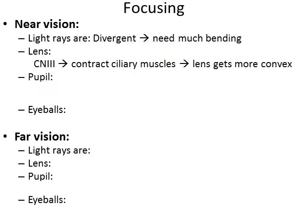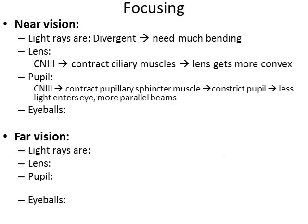The pupil is going to need to constrict, so we use cranial nerve three to contract the pupillary sphincter muscles. This constricts the pupil and lets less light into the eye. This means some of those very divergent rays that would be too angled for the lens to bend are going to miss the eyeball — we only catch rays that aren't quite as divergent, making the job of the lens a little easier and more possible. The pupil does that to miss divergent rays; the lens becomes more convex to focus the light stronger and provide more bending power.